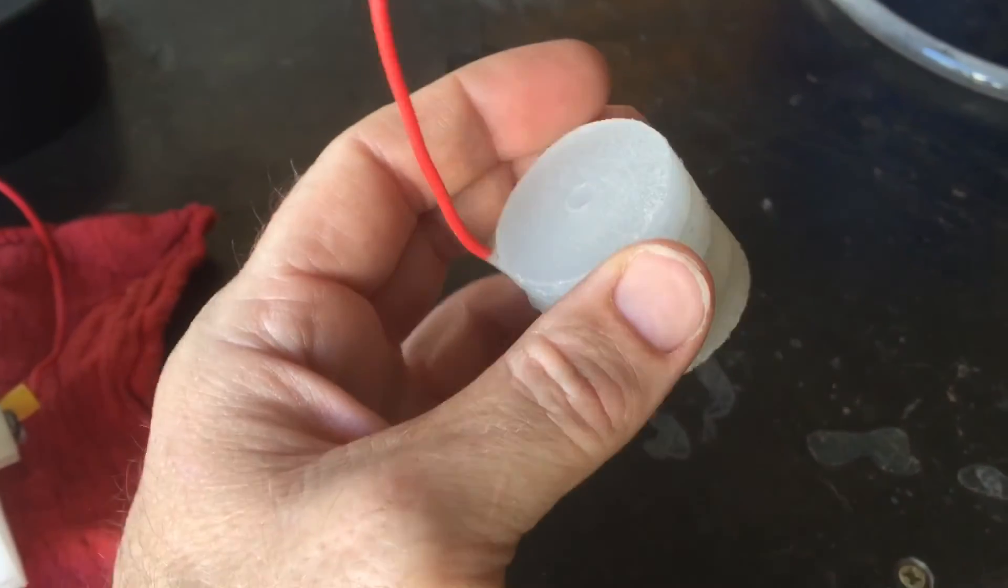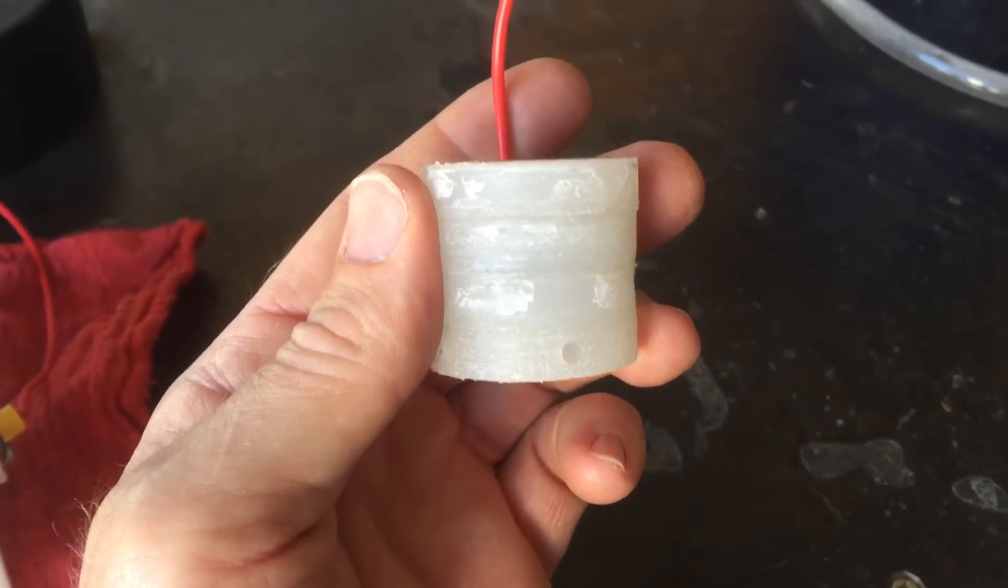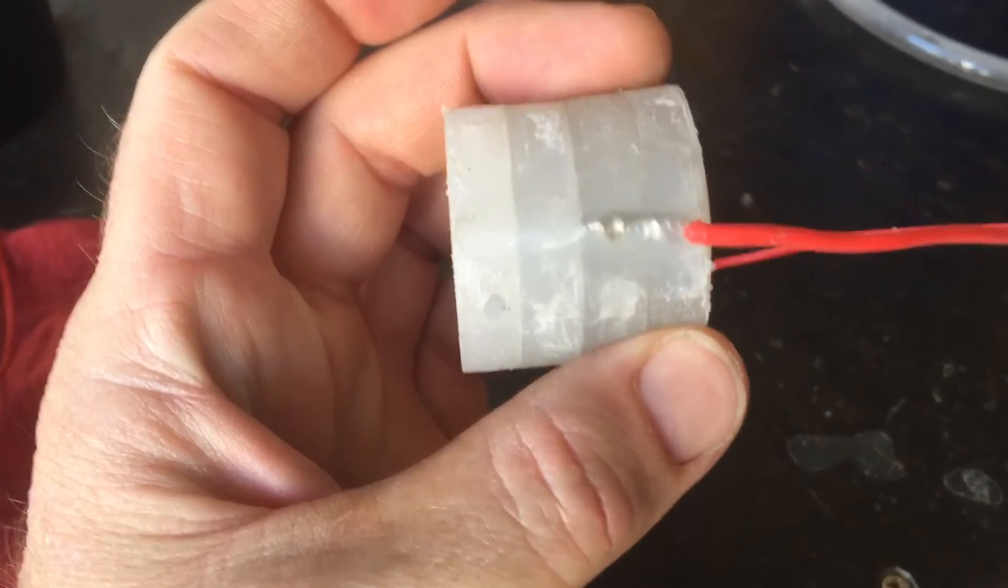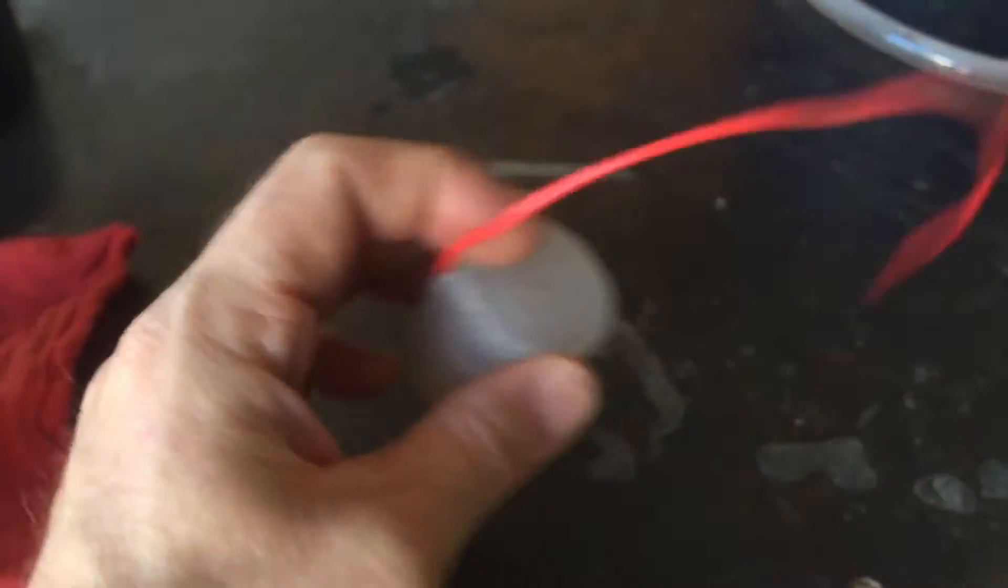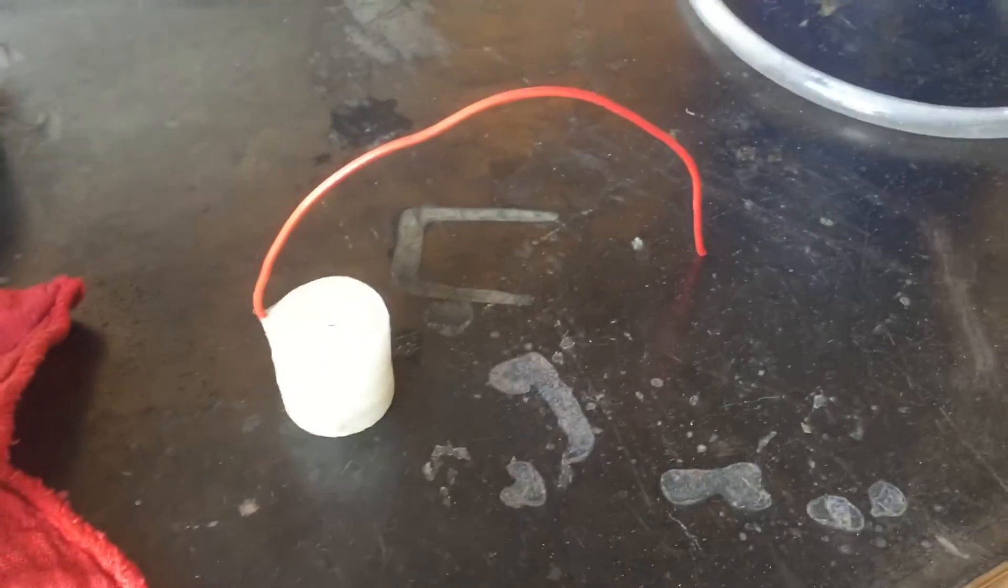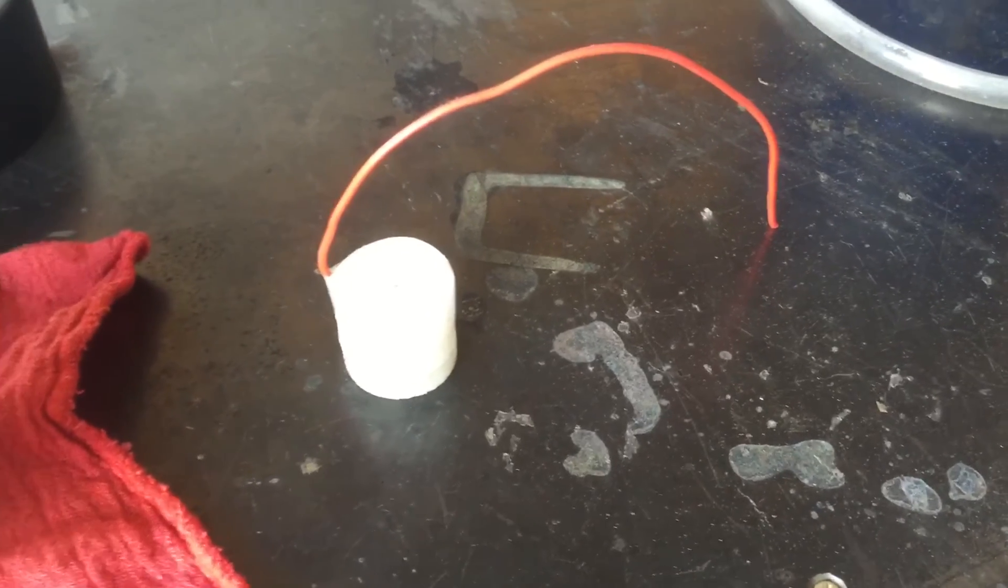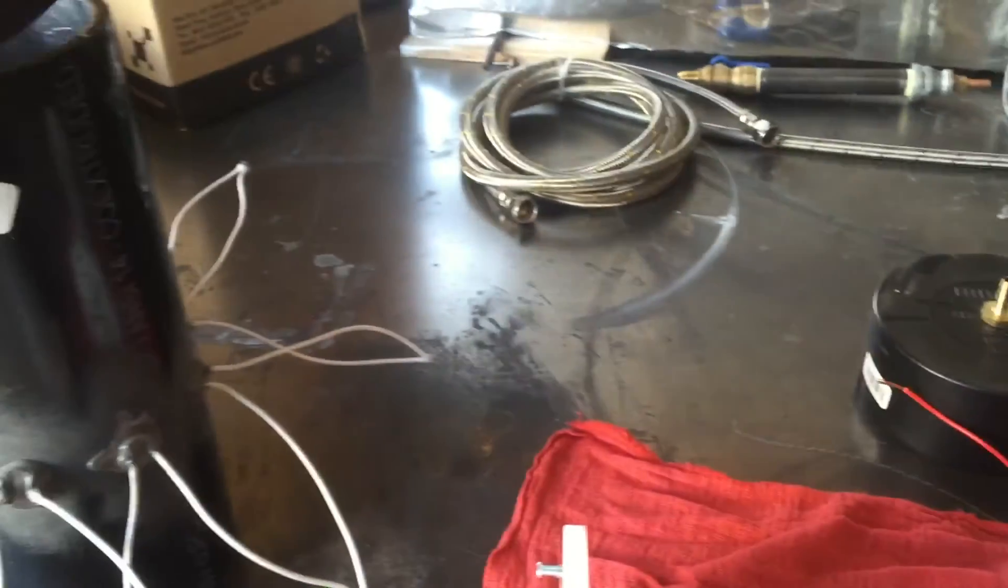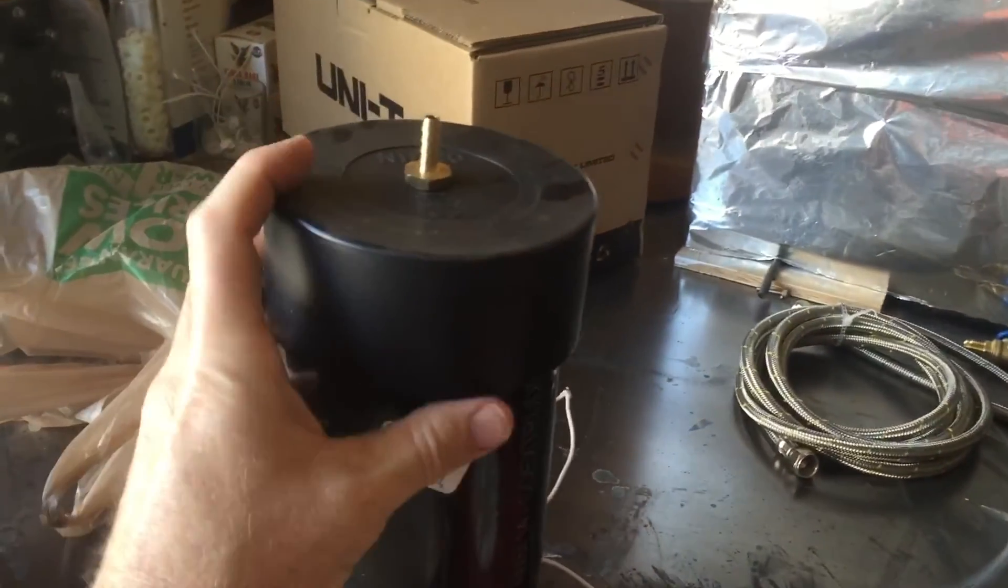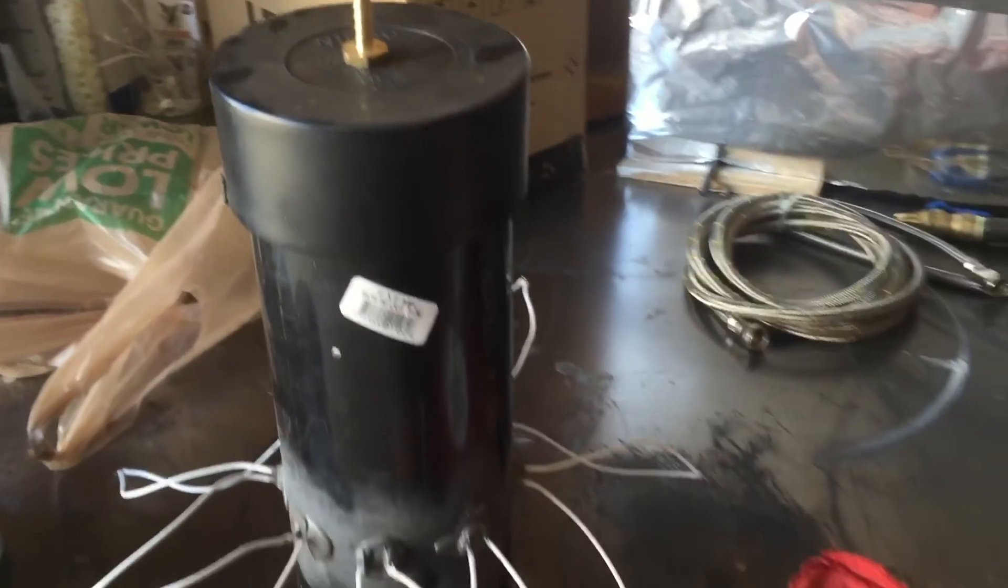And in between two of them I have 400 mesh screen, three layers. That's all sandwiched together here, all soldered to this one wire. It'll have a positive charge to it. These are the caps, they'll just be the inlet and outlet.